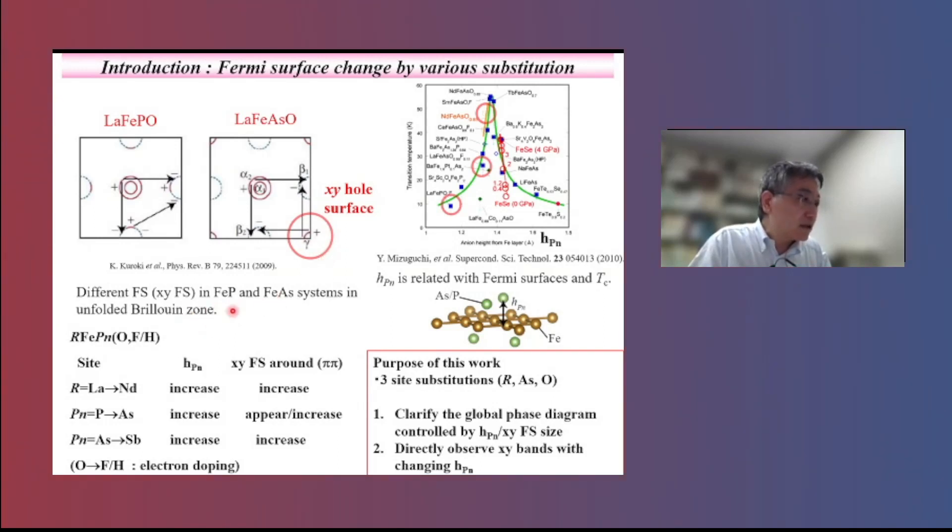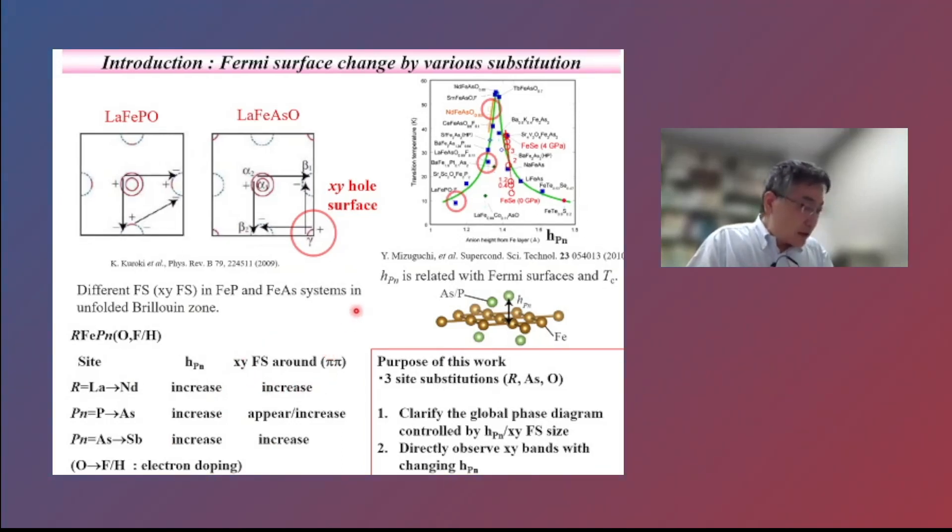There are several substitution effects for controlling nitrogen height and XY Fermi surface. So, in our work, we performed the three different sites substitution: the rare earth, nitrogen, and oxygen sites. And we have clarified the global phase diagram controlled by HPN and XY Fermi surface. In addition, we have studied ARPES to directly observe XY band with changing HPN.